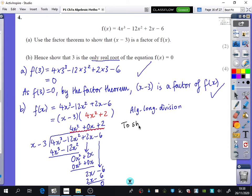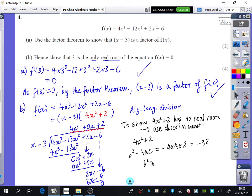So to show 4x squared plus 2 has no real roots, we use the discriminant. So we have 4x squared plus 2. And so b squared minus 4ac is going to be, what is the result of b? What's b squared in this going to be? 0. And then you've got minus 4 times a times c, which is minus 32.